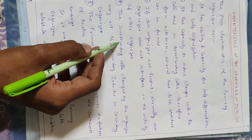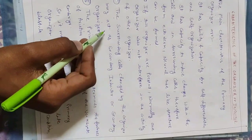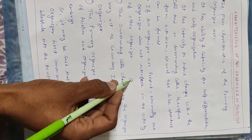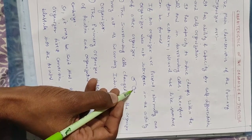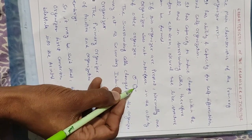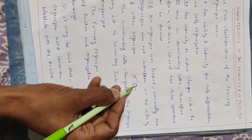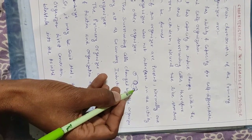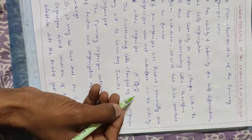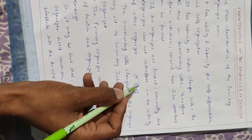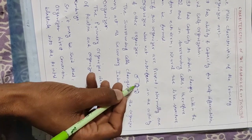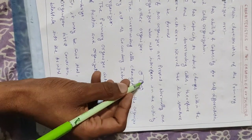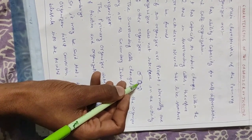The fourth characteristic is that the surrounding cells changed by the organizer may act as a secondary inductor or secondary organizer. Some responder cells can themselves induce other cells. The differentiation caused by primary inductors forms secondary cells, which then become secondary organizers or secondary inductors.